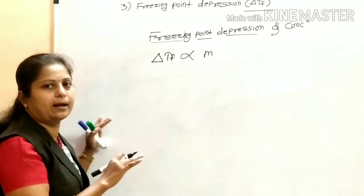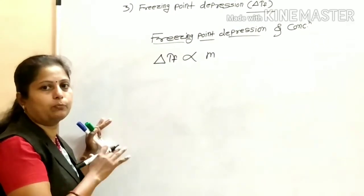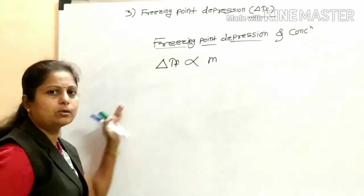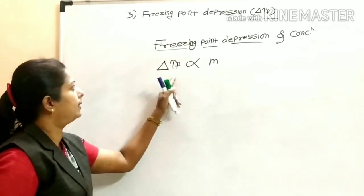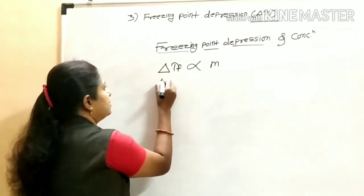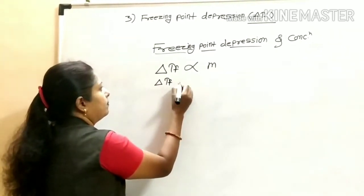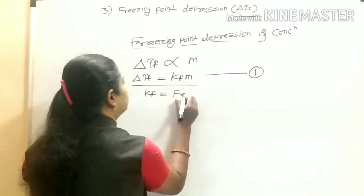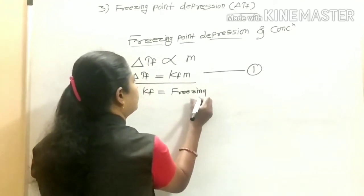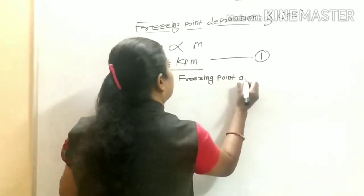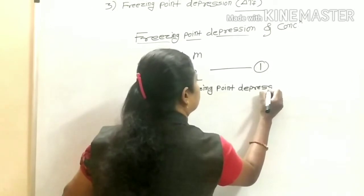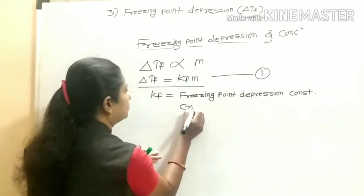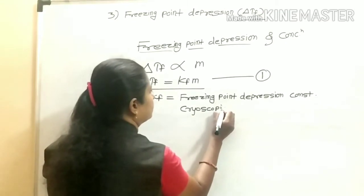Freezing point depression and concentration relation: Delta Tf is directly proportional to molality m. Since the number of solute particles determines the freezing point, Delta Tf is directly proportional to m. This gives us the equation: Delta Tf is equal to Kf into m.